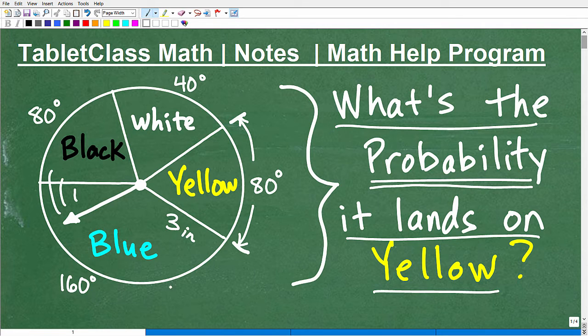So here we have 80, and then our blue is obviously bigger, so this is 160 degrees. And then over here we have black, which is also 80, and then this little white sector, which is 40. So it's not a perfect figure, but hopefully this problem is making sense.